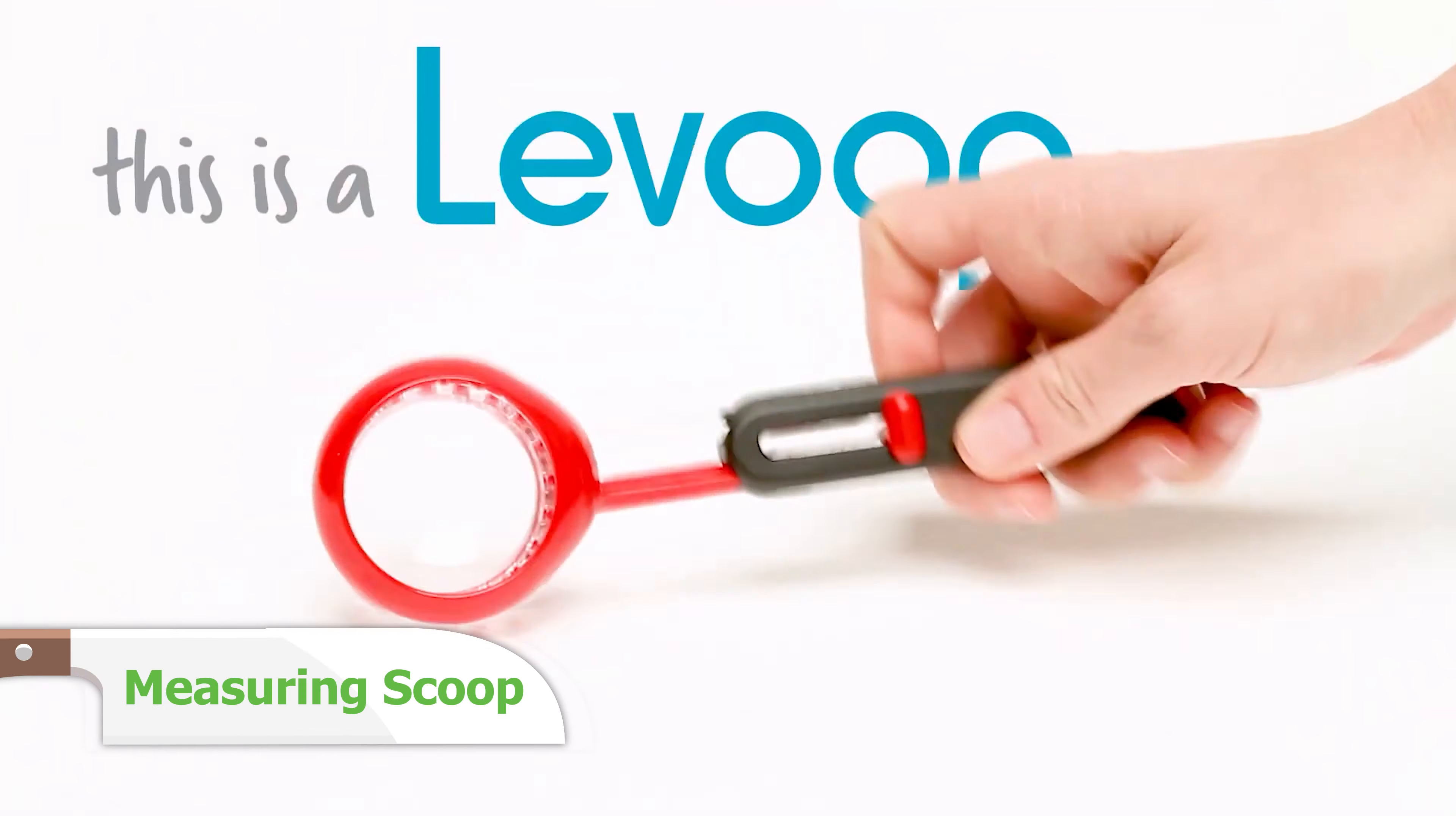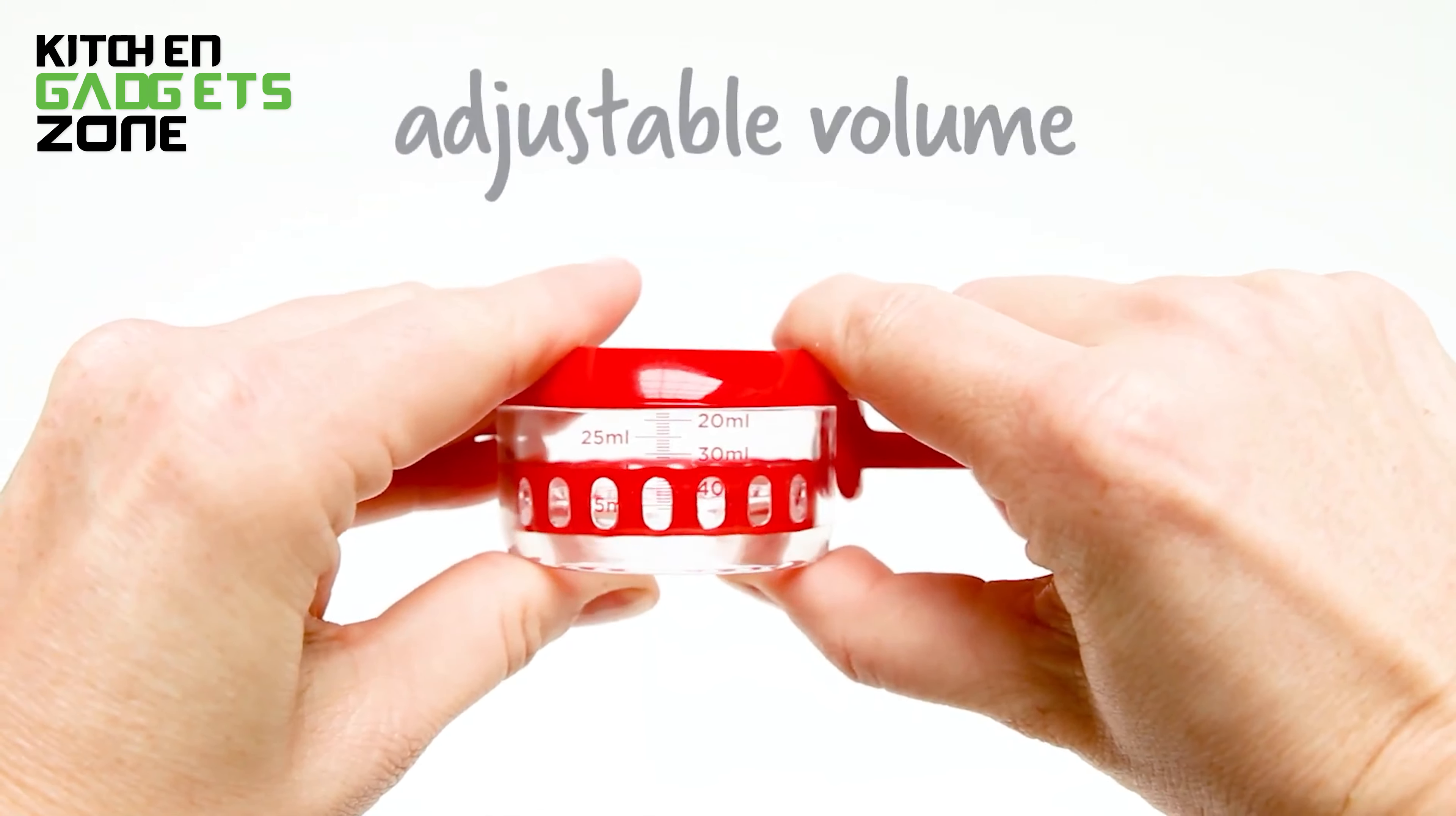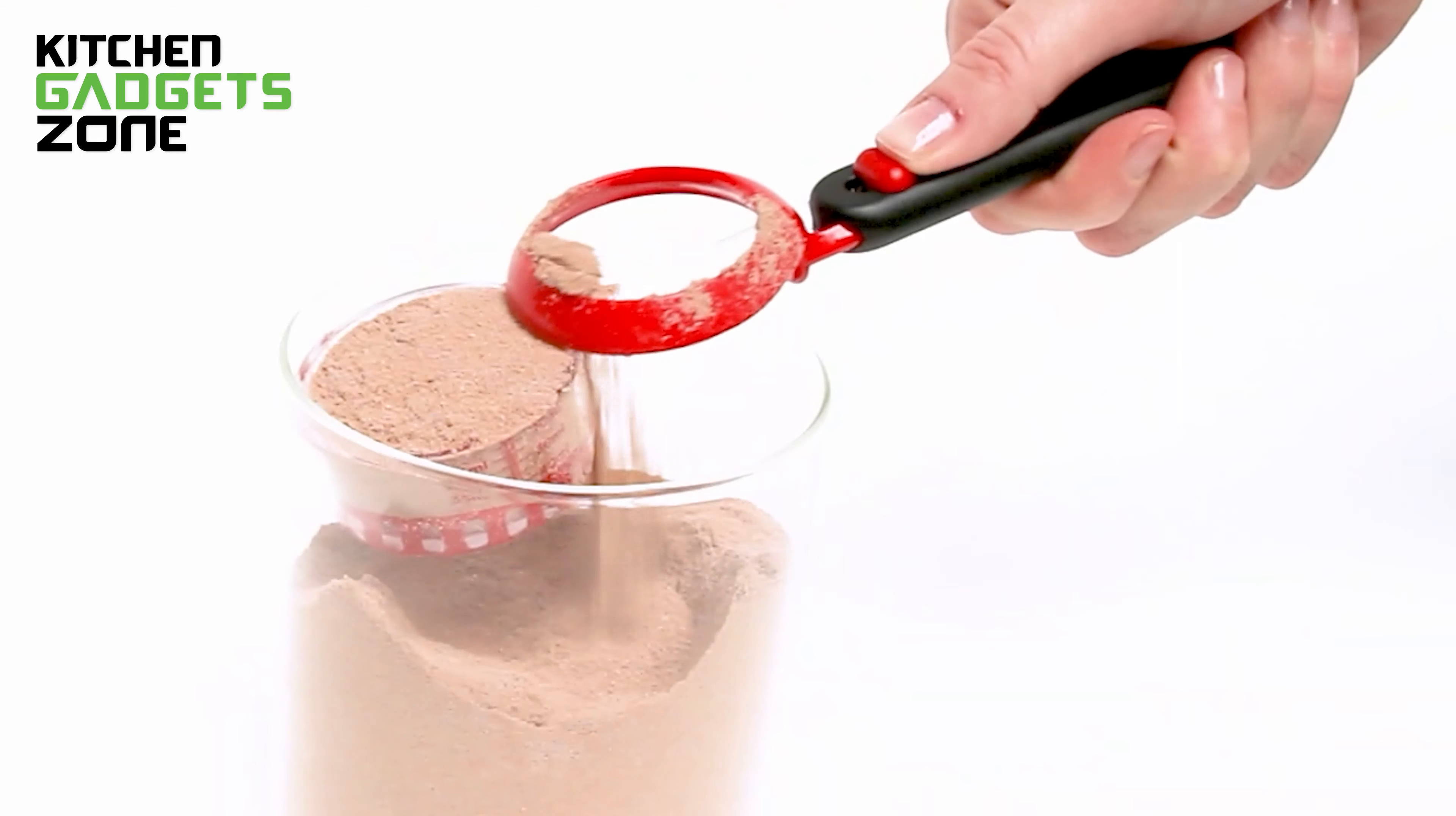No more inconsistent measurements with this LeVoop Adjustable Measuring Scoop. Whether you're scooping ground coffee, protein powder, or baby formula, LeVoop's adjustable base stays at the precise volume you need. Simply scoop up your ingredient, then slide the button to level it off for a consistent and accurate measure every time. No more overflowing or underfilled scoops.